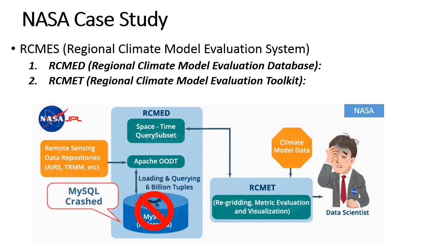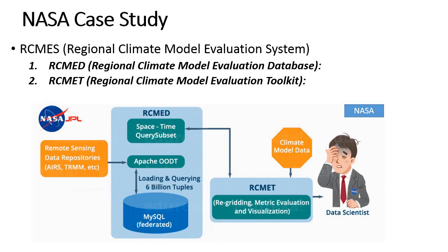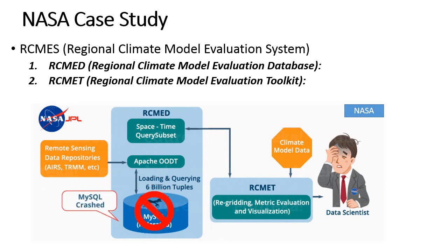The reference data in RCMES comes from satellite-based remote sensing repositories such as AIRS and TRMM, according to the different parameters required for climate model evaluation. For example, AIRS — the Atmospheric Infrared Sounder — provides parameters like surface air temperature and geopotential. TRMM — the Tropical Rainfall Measurement Mission — provides monthly precipitation data.